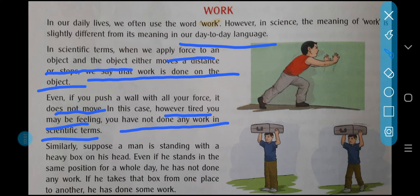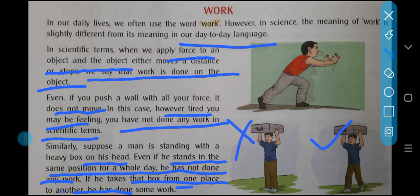Similarly, suppose a man is standing with a heavy box on his head. Even if he stands in the same position for a whole day, he has not done any work. If he takes that box from one place to another, he has done some work. So in scientific terms, work happens when there is movement. When any movement is done, only then is it known as work. Work is being done when the person walks and moves from one place to another.